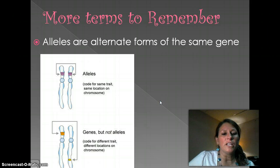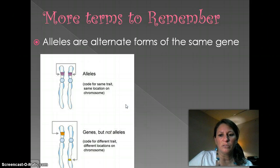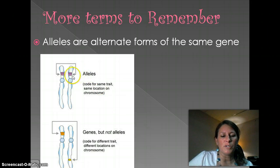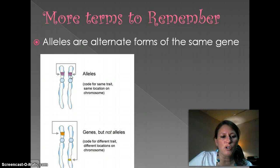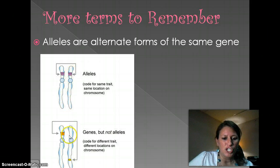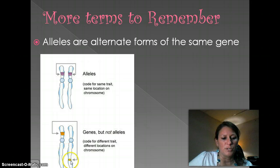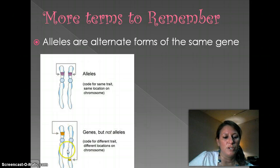I've used the terms allele and gene — these are two different terms, do not use them interchangeably. Alleles always occur in pairs; an allele will code for the same trait and is located at the same place on the chromosome, so you can see they are directly across from one another. Genes are different traits at different parts of the chromosome — for example, hair color and eye color are two different genes.